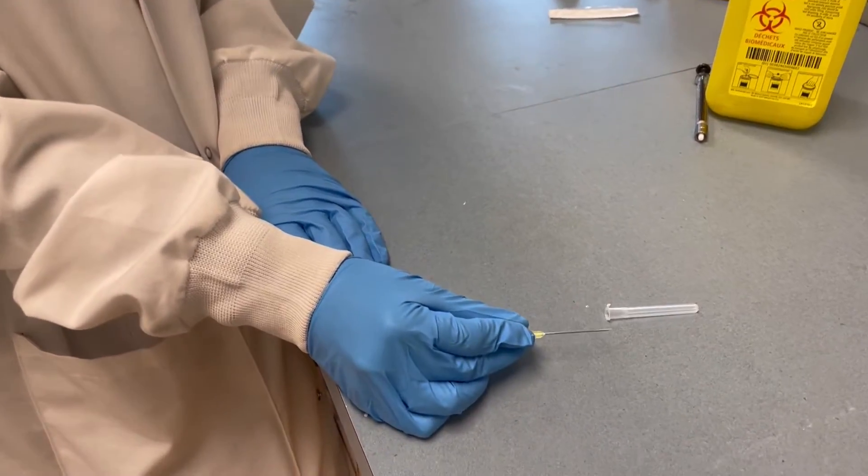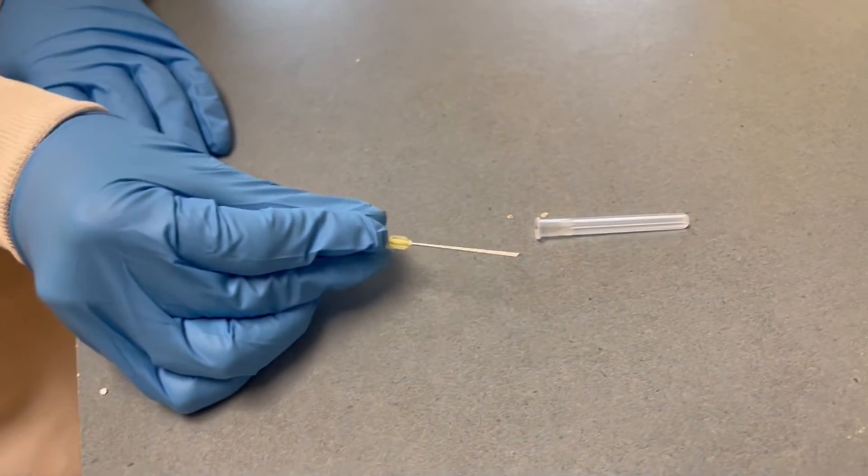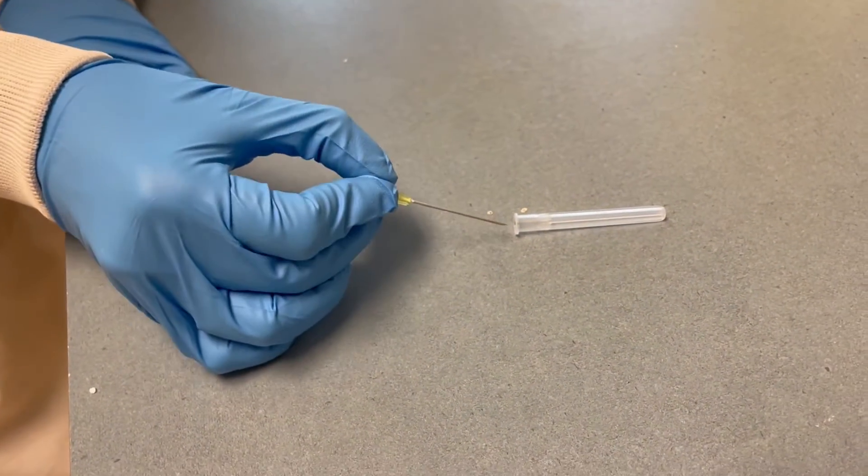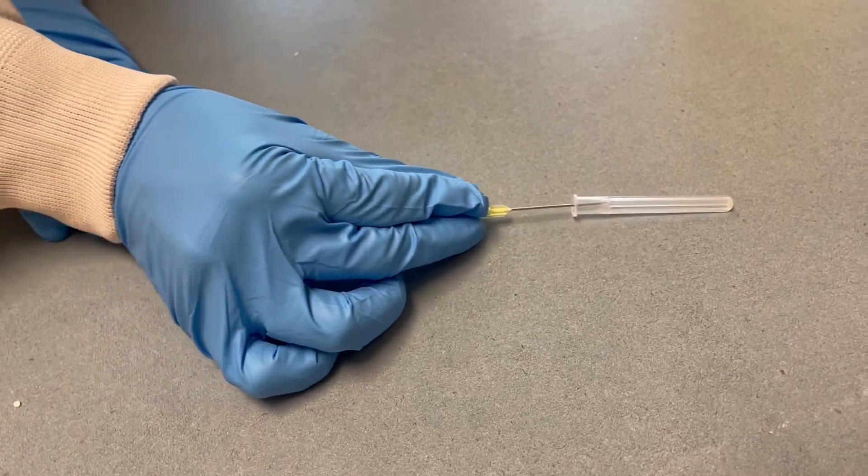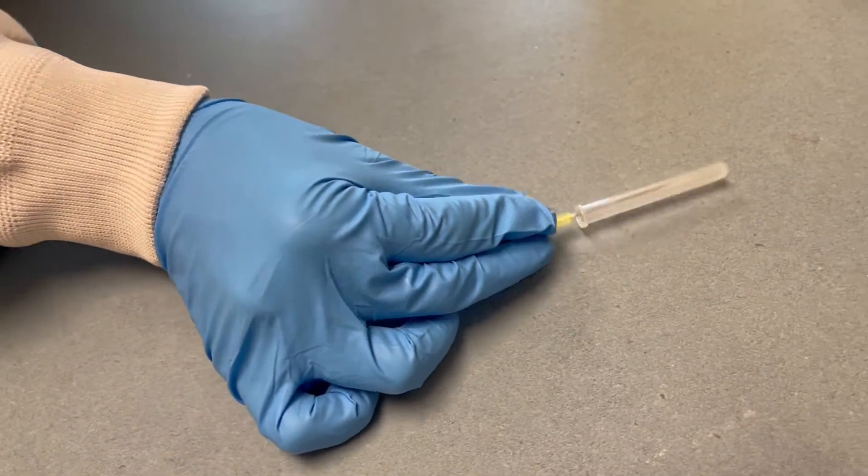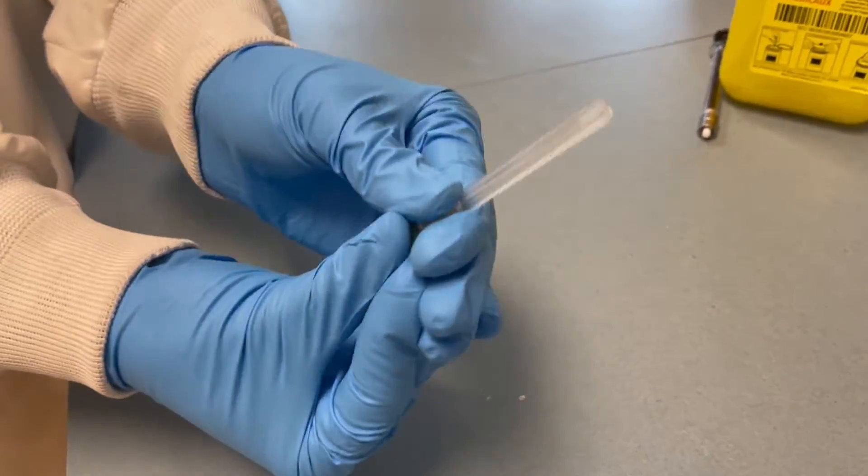Needles shouldn't be recapped, but if you must do so you want to use the scoop method, which is where you come at the cap at an angle, insert most of the needle in there until you can flip it back up and tighten the cap on there.